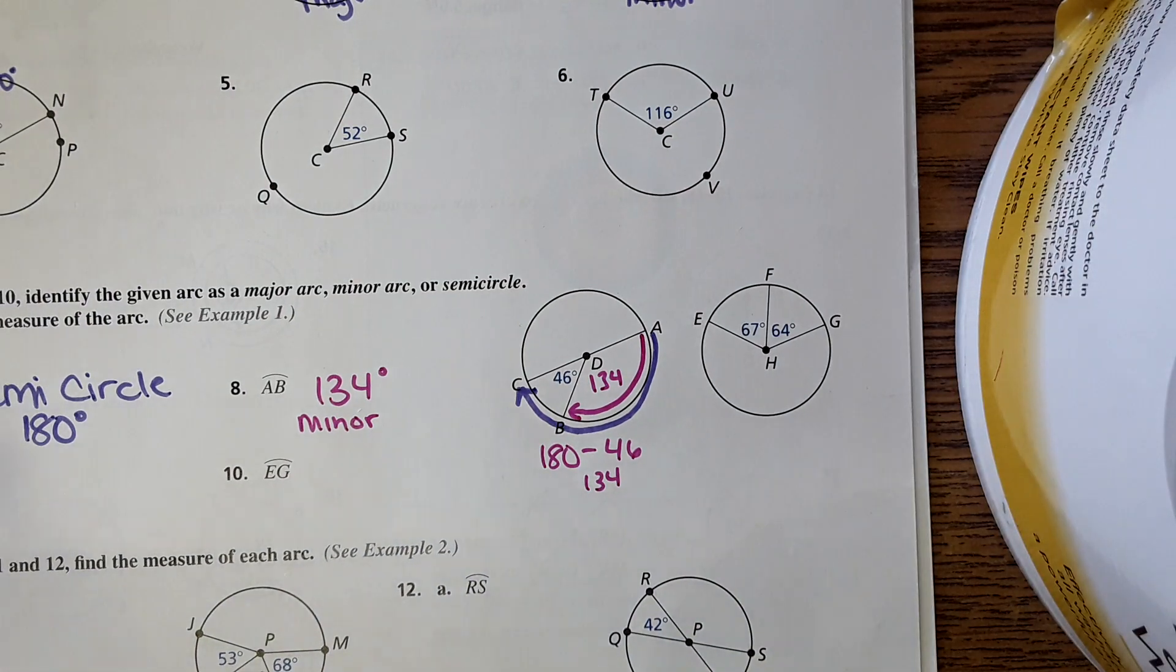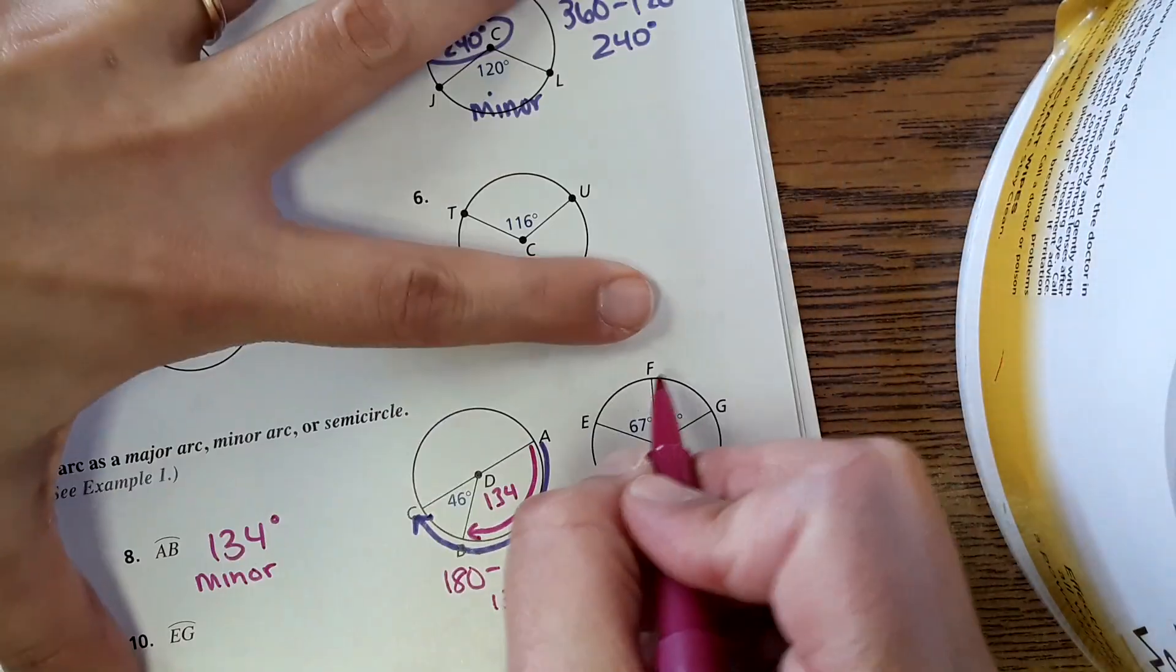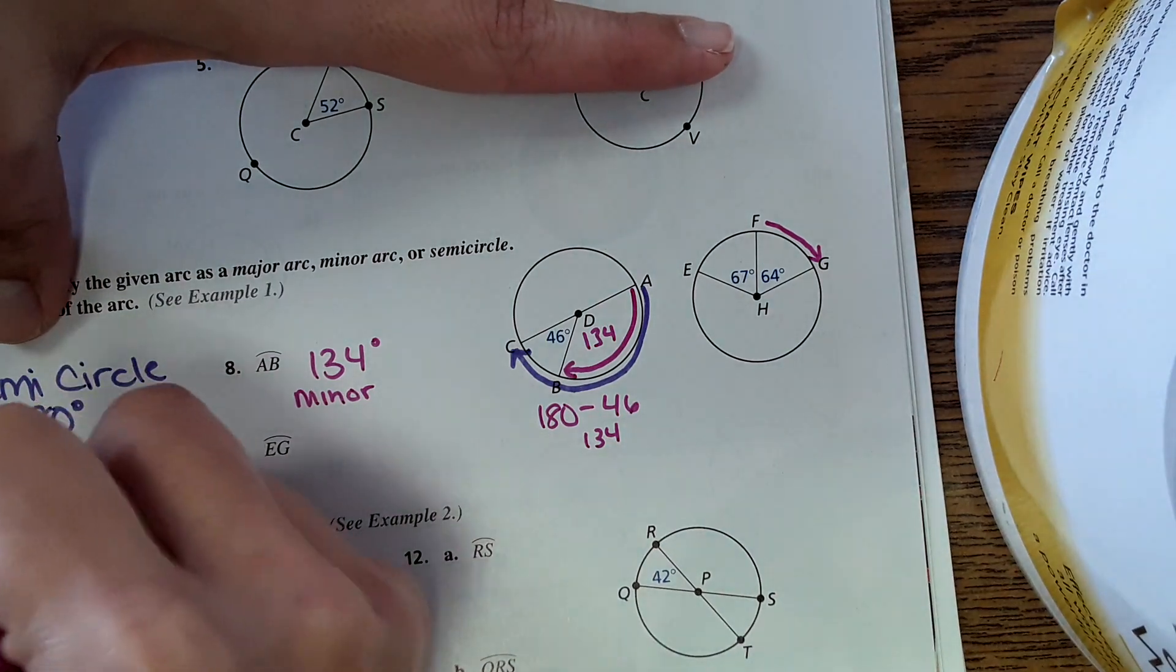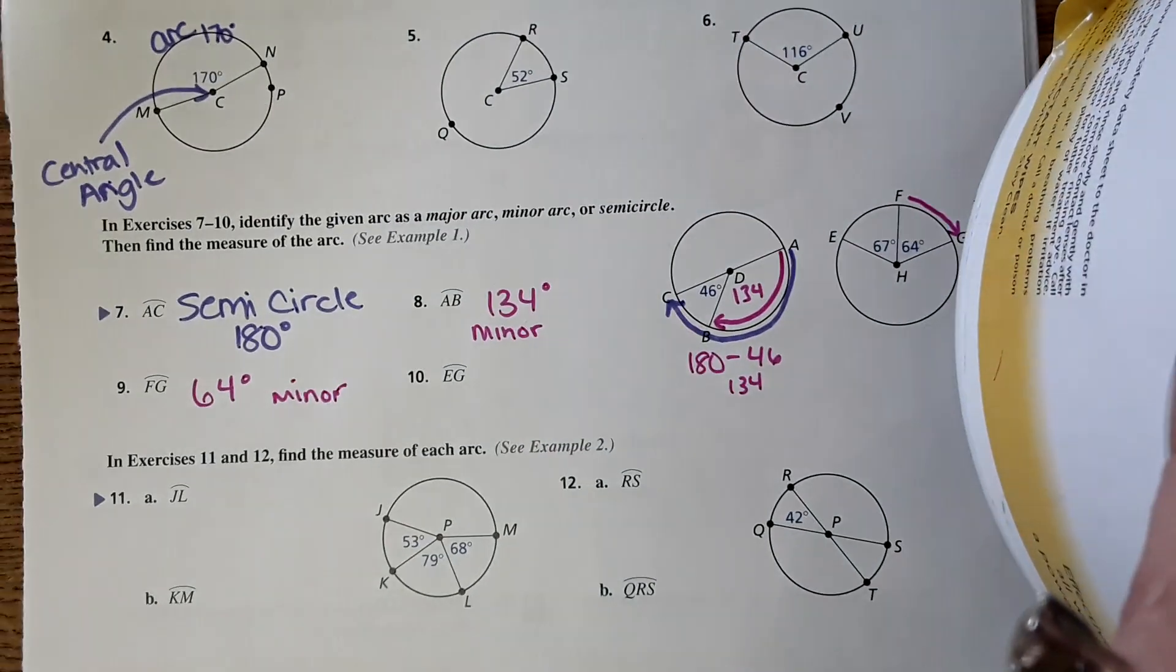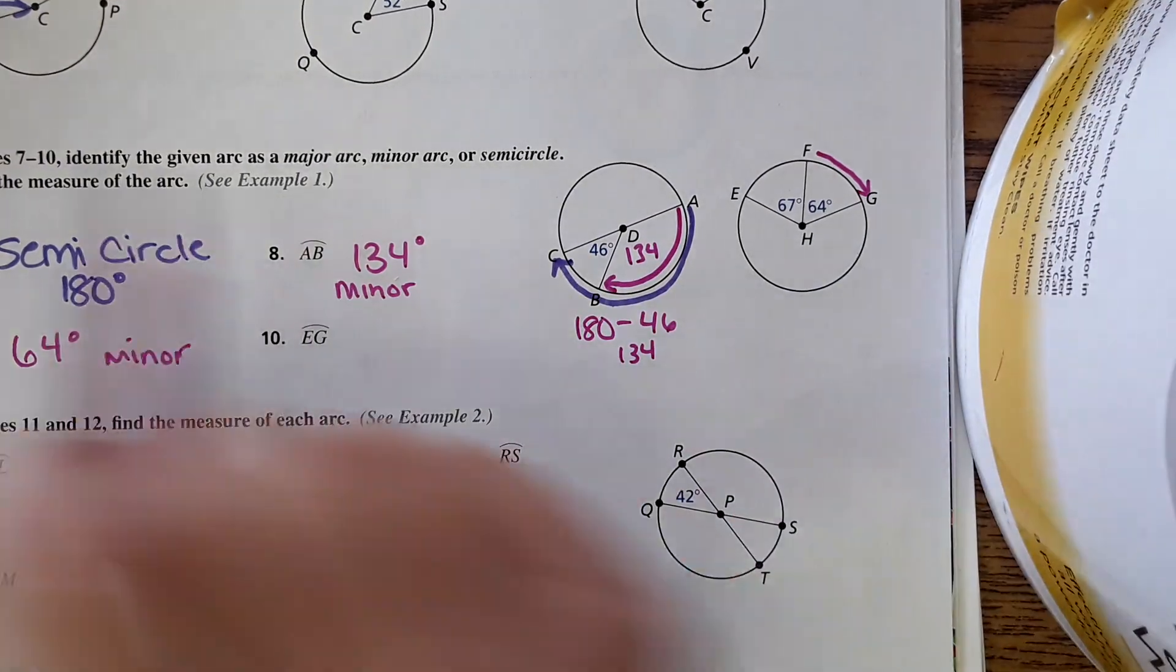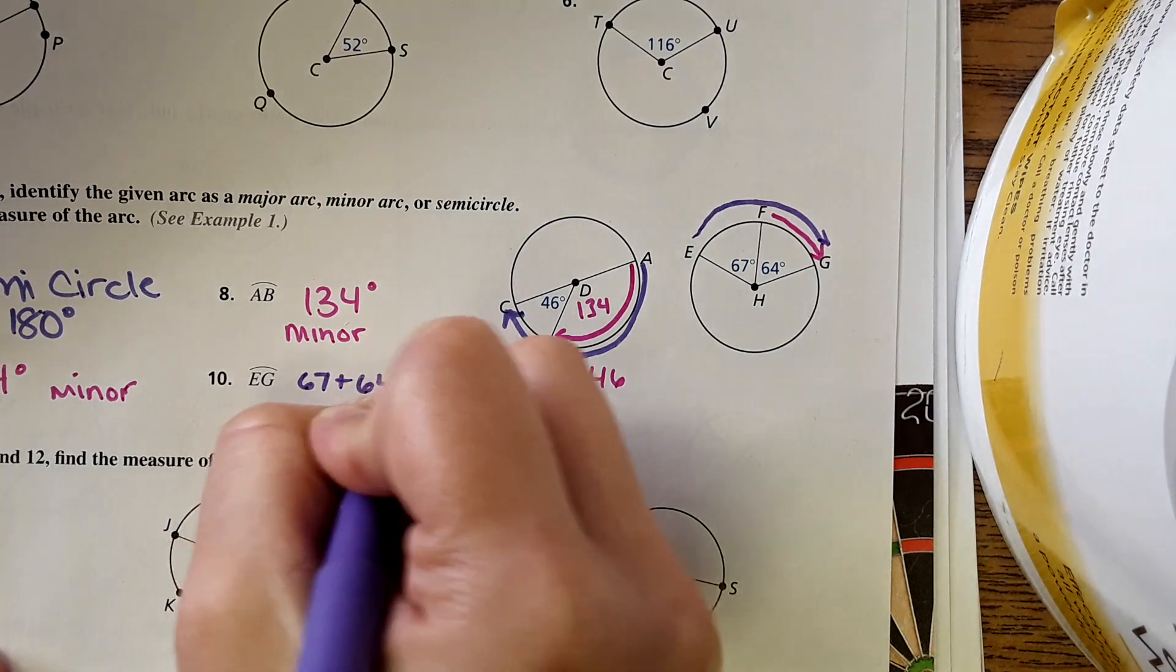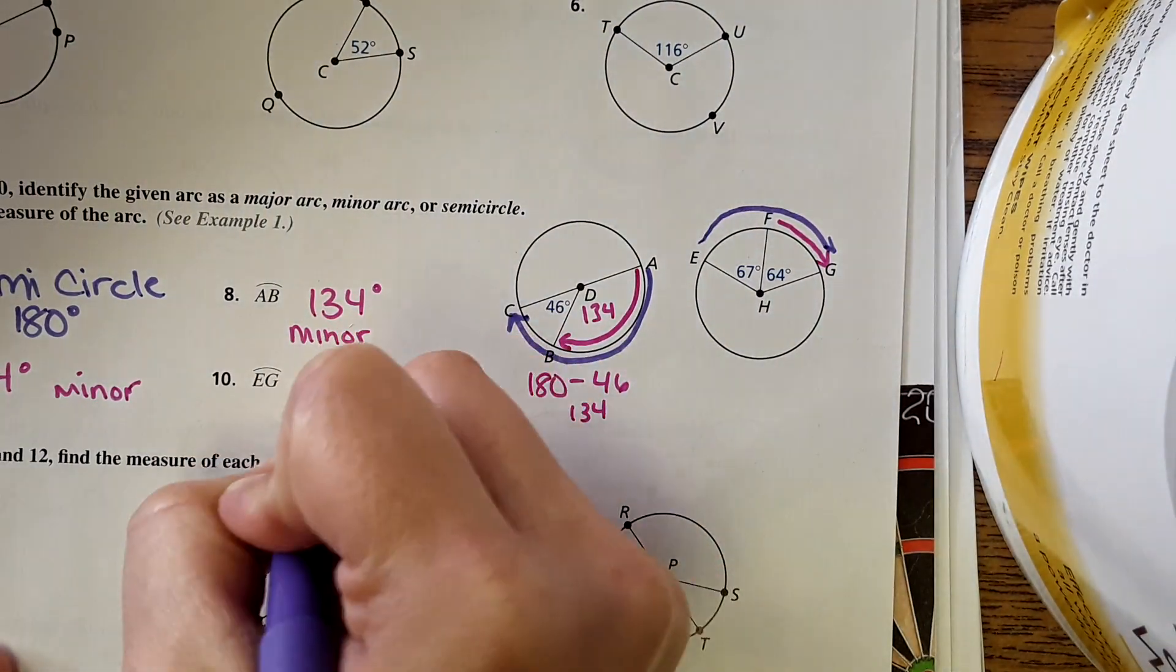Next one, it says it wants arc FG. Looking over here, FG just from F to G, it already says the measure right here, 64 degrees, minor. And then EG would be from here to here, just add 67 plus 64 and that comes out to 131 degrees, again still a minor.